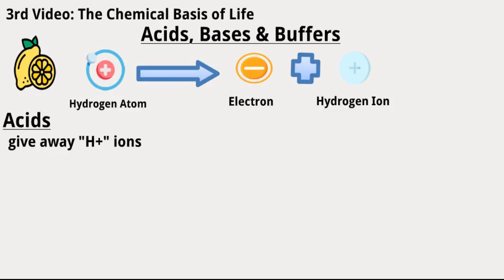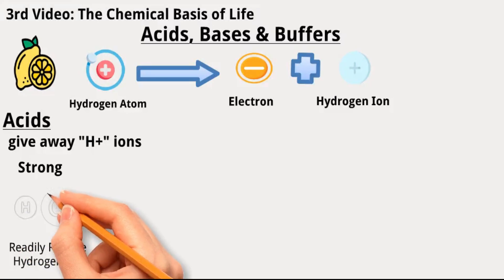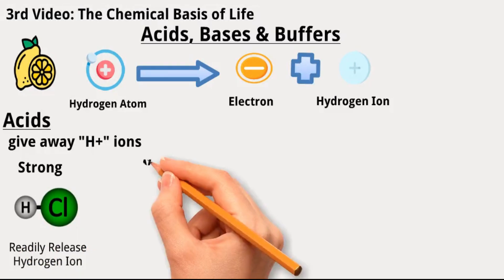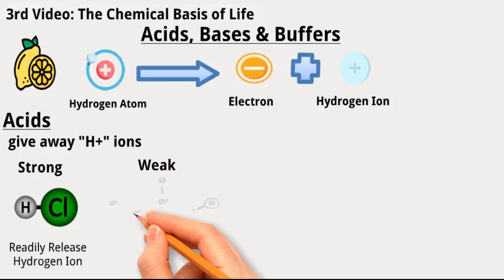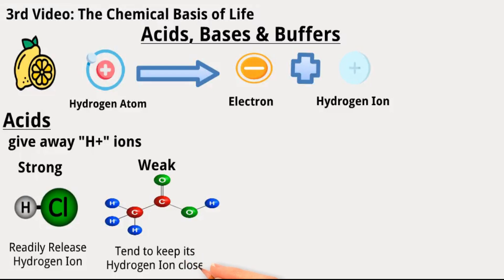Acids exhibit varying degrees of willingness to part with their hydrogen ions. Strong acids readily release hydrogen ions such as hydrogen chloride, HCl. In contrast, weak acids, like acetic acid, are a bit more reserved and tend to keep their hydrogen ions close.